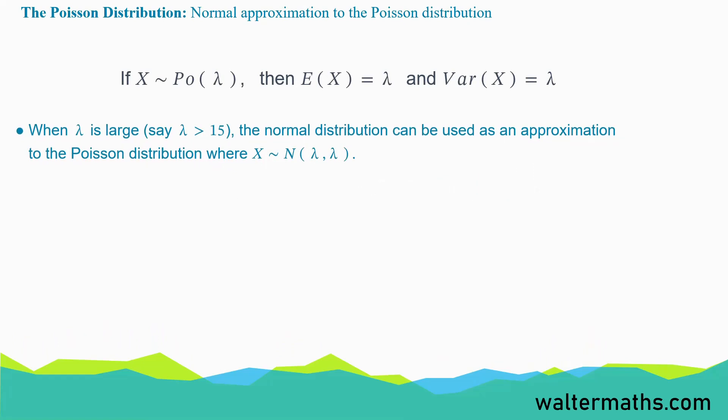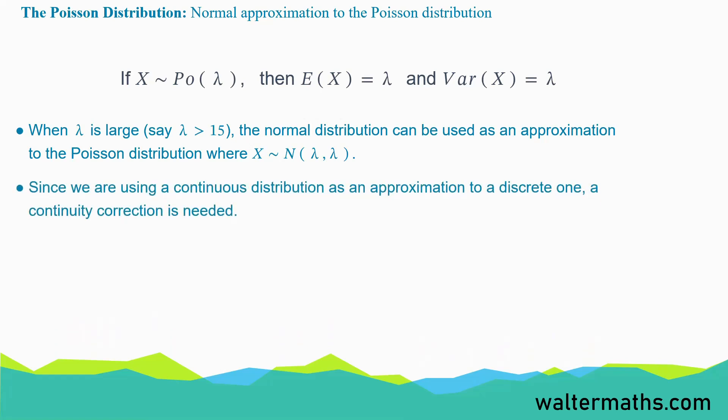When lambda is large — say lambda is greater than 15 — the normal distribution can be used as an approximation to the Poisson distribution, where X follows a normal distribution of mean lambda and variance lambda. Since we are using a continuous distribution as an approximation to a discrete one, a continuity correction is needed.